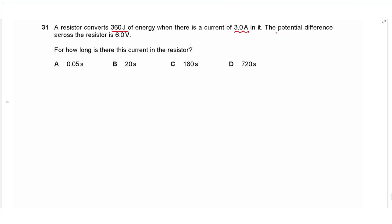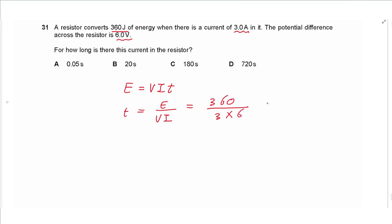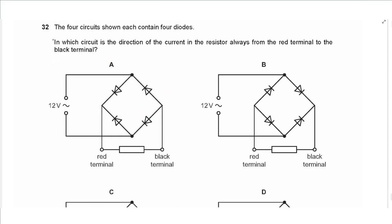Question 31: a resistor converts 360 J of energy with a current of 3 A and a potential difference of 6 V. Using E = VIt, time equals energy divided by (V × I): 360 / (6 × 3) = 20 seconds. The answer is B.